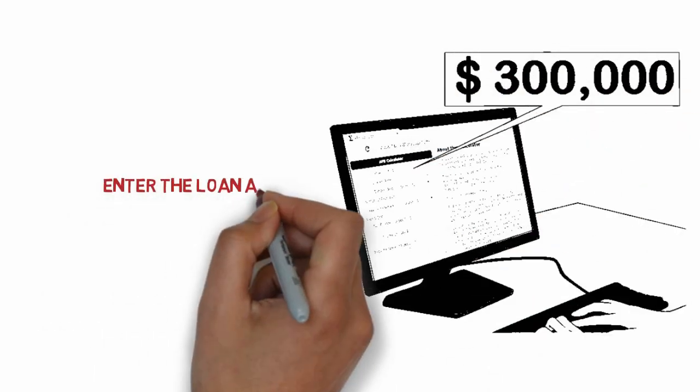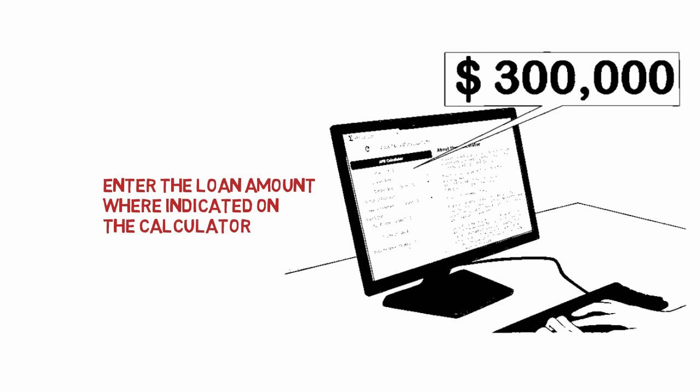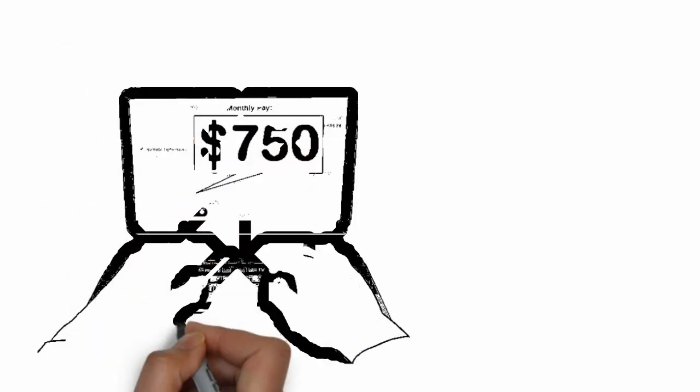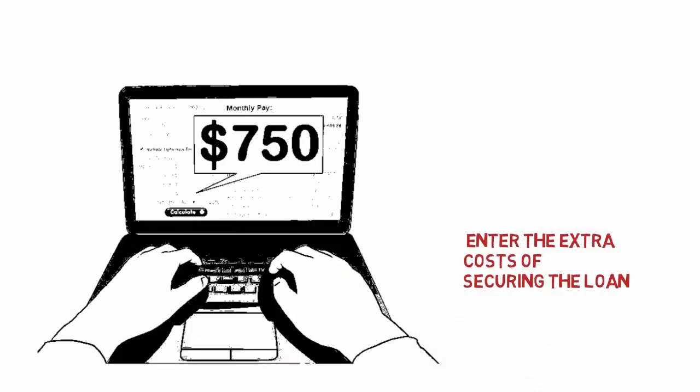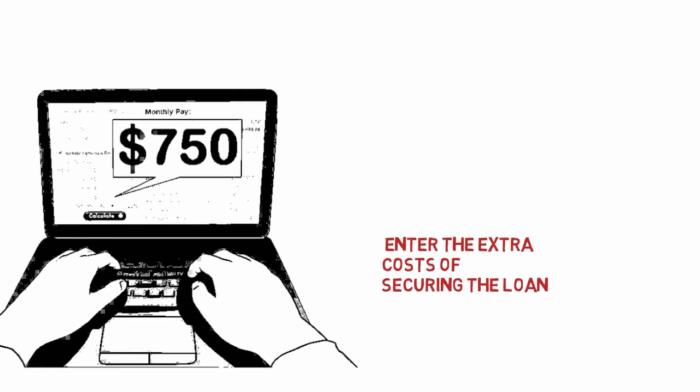Enter the loan amount where indicated on the calculator. For this example, assume you are taking out a $300,000 mortgage loan. Mortgages are simply specific loans on houses. Enter the extra costs of securing the loan fees where indicated on the calculator. For this example, assume it costs $750 extra in fees. If you're just planning potential mortgages, you might not have fee information yet — this is fine to leave out, as it won't make an enormous difference on the final calculation.